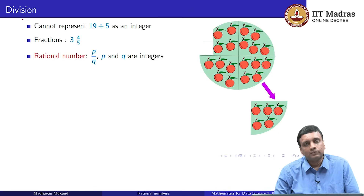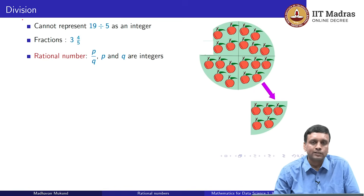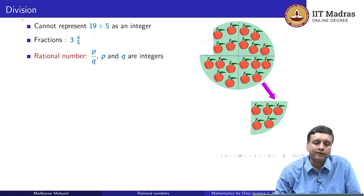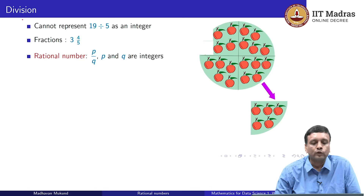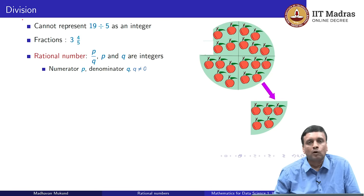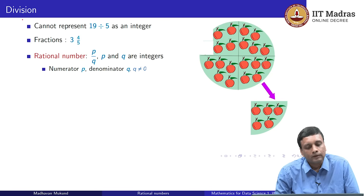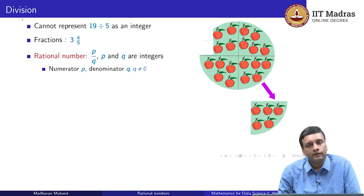A rational number — what we usually call fractions in school — is something that can be written as p divided by q, where p and q are both integers. As you probably remember from school, the number on the top is called the numerator and the number on the bottom, q, is called the denominator.